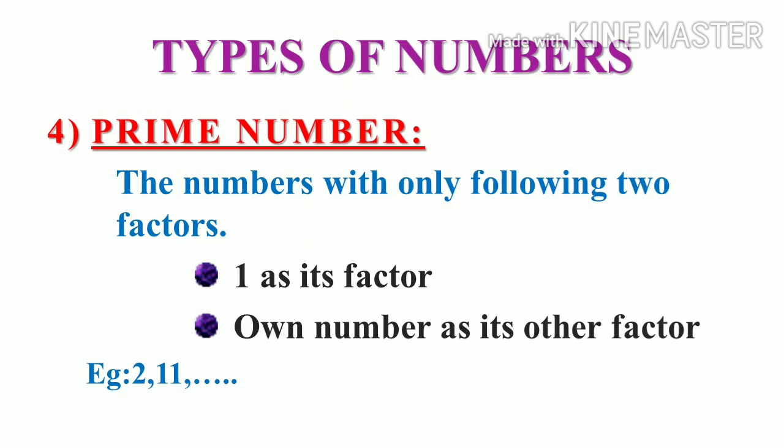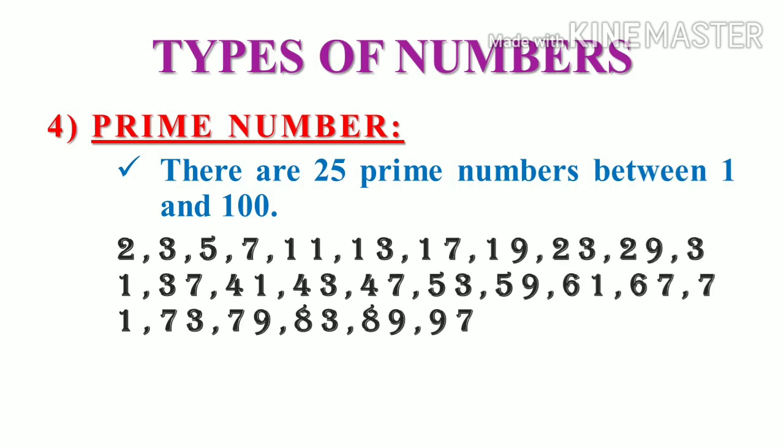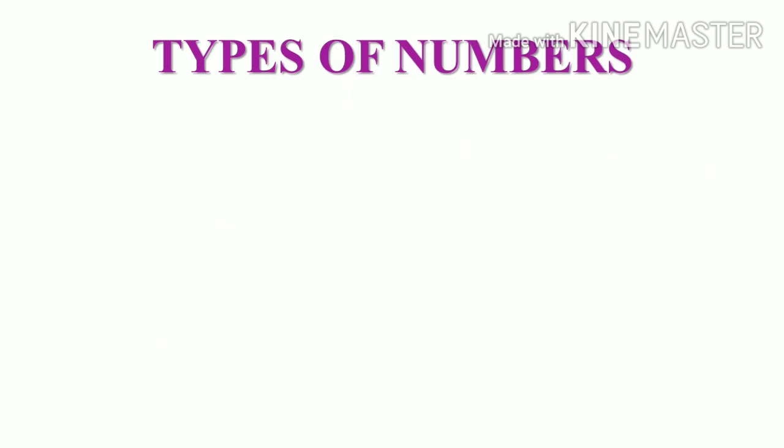We can have another example like 6. If we take 6, it is 2 into 3, so it has other factors other than 1 and its own number. In between 1 and 100, we have totally 25 prime numbers. And here is the list. If you observe carefully in this list, only 2 is the even prime number. Why? Because other than 2, all the other even number has 2 as its factor.